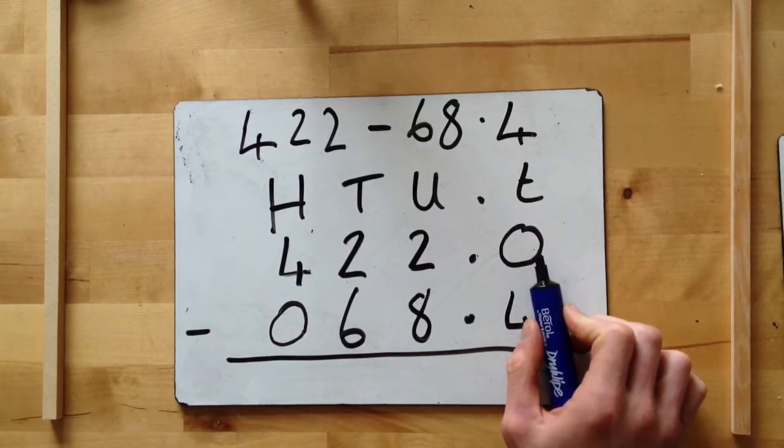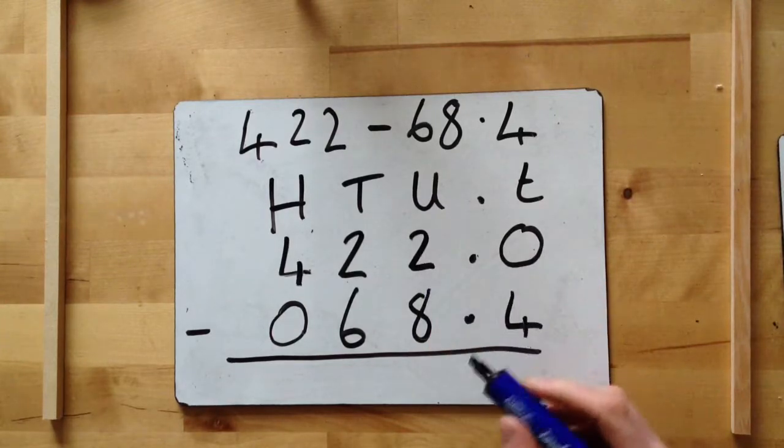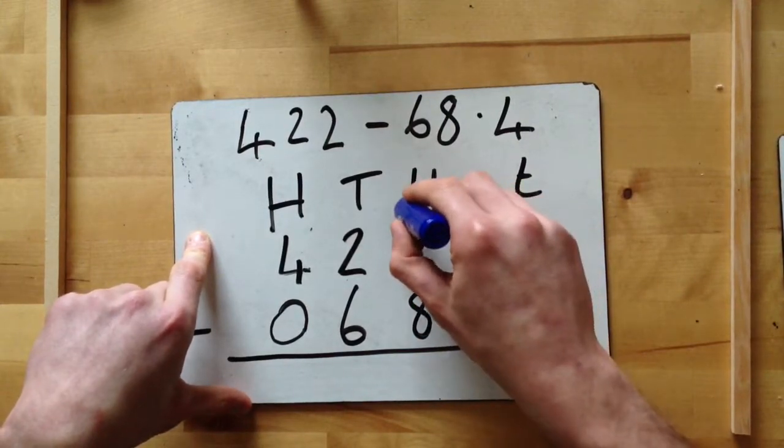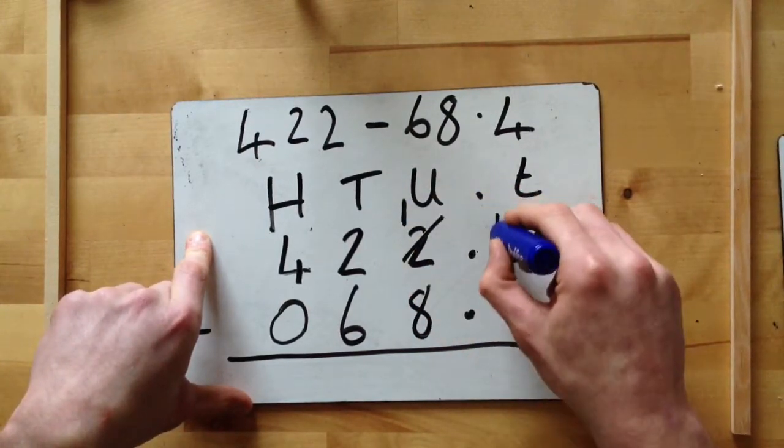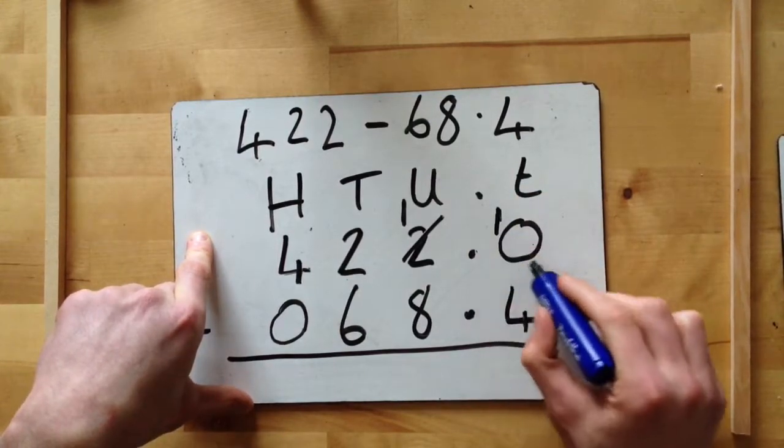So we need to borrow. Zero, where do you borrow from? There's a person beside you. So the zero looks to the two and says, 'Can I borrow one?' He's like, 'Yeah, I got two.' So two becomes a one and lends him a one. Now he becomes a ten.